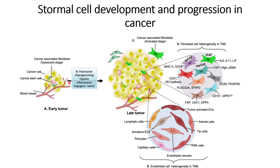When the tumor progresses from its early stage to the late tumor stage, there is an intermediate stage where specific conditions such as hypoxia, inflammation, and genetic switch might occur. These conditions might trigger the reprogramming of the cancerous cells, which will lead to the activation of the quiescent cancer-associated fibroblasts.